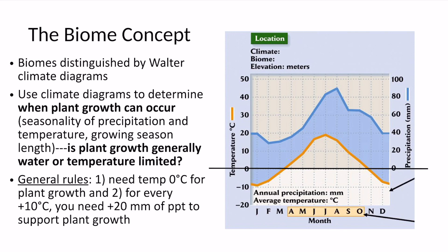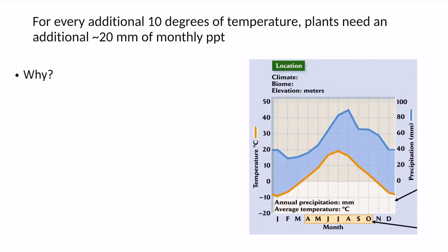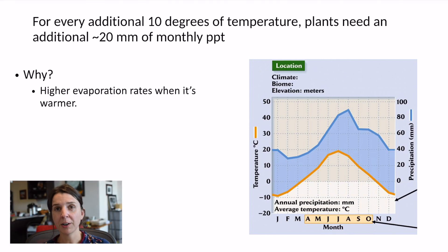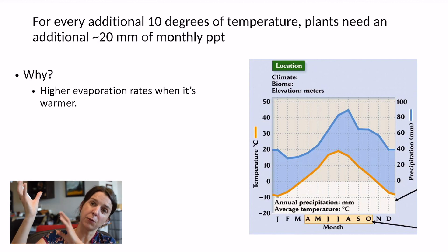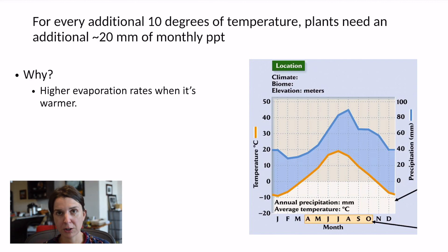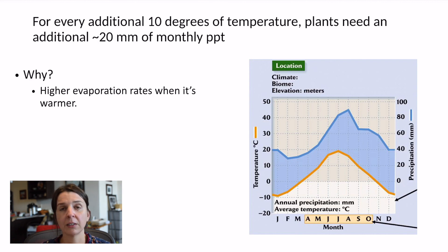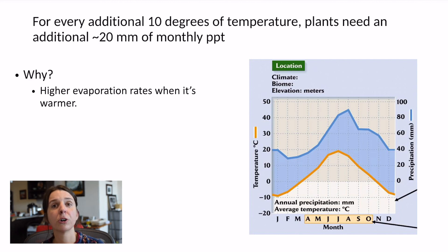The second rule for interpreting these Walter climate diagrams is that for every 10 degrees of temperature, a plant needs 20 millimeters of precipitation to support growth. Why is that? When it's hotter, there's more evaporation, so when it's warmer, you need more water in the form of precipitation to counter the loss of water through evaporation. That's evaporation from the soil before plants can take it up, but mostly it's water evaporating from plant surfaces like leaves — transpiration. So the warmer it is, the more precipitation plants need in order not to be water limited.